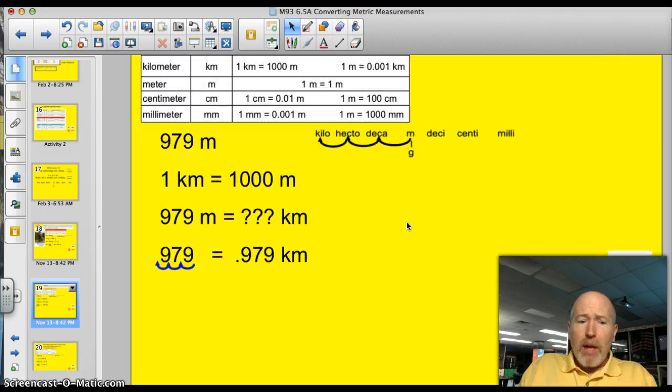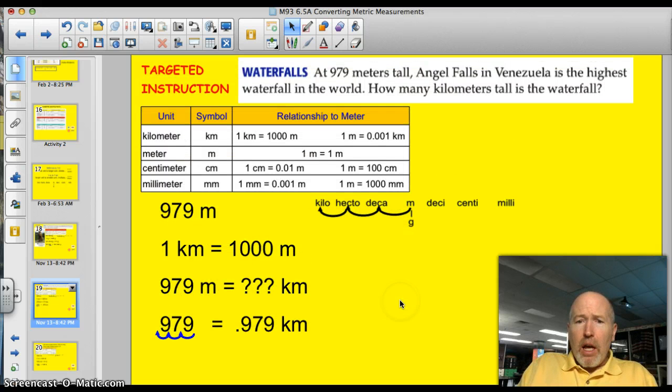I'm going to have you work on this problem here. At 975 meters tall, Angel Falls in Venezuela is the highest waterfall in the world. How many kilometers tall is this waterfall?